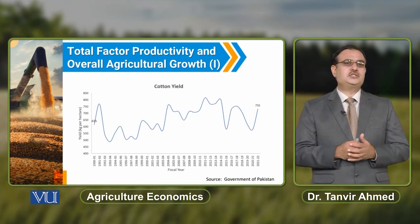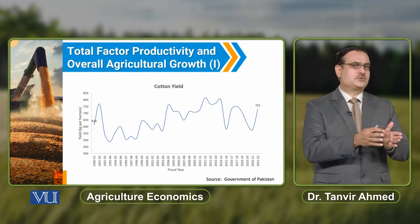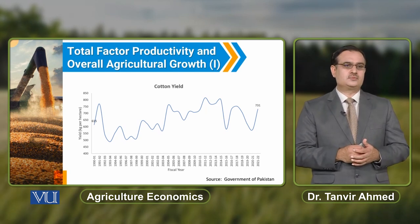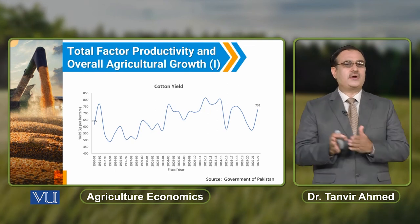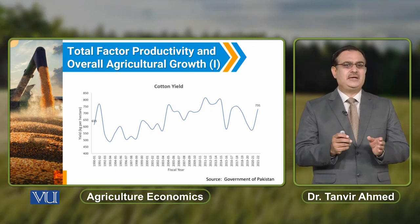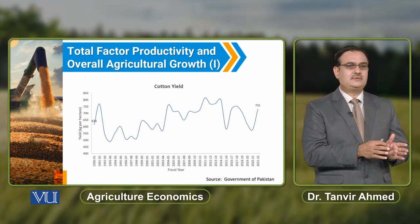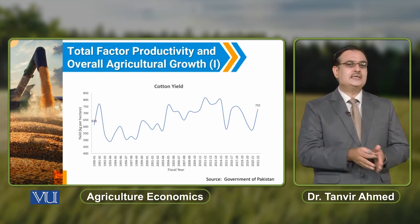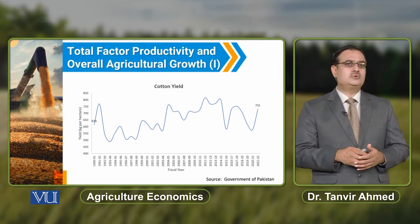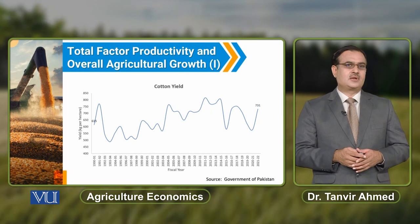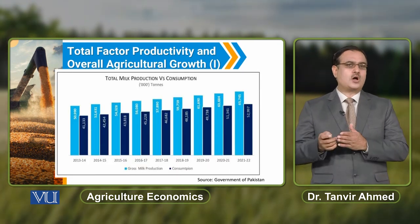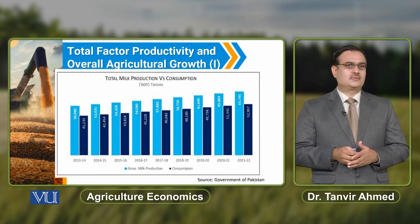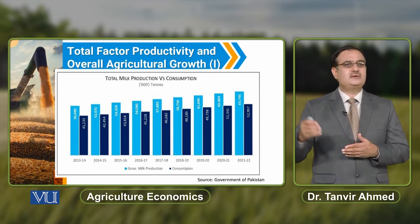When we talk about cotton yield, we can observe a lot of fluctuation during 1992 to 2021–22. But if we talk about the starting point and final point in the reference period, there is only a minor increase — from 635 kg per hectare in 1991 to around 731 kg per hectare. With reference to the crop sector, we have observed an increase in the production of major crops per hectare.